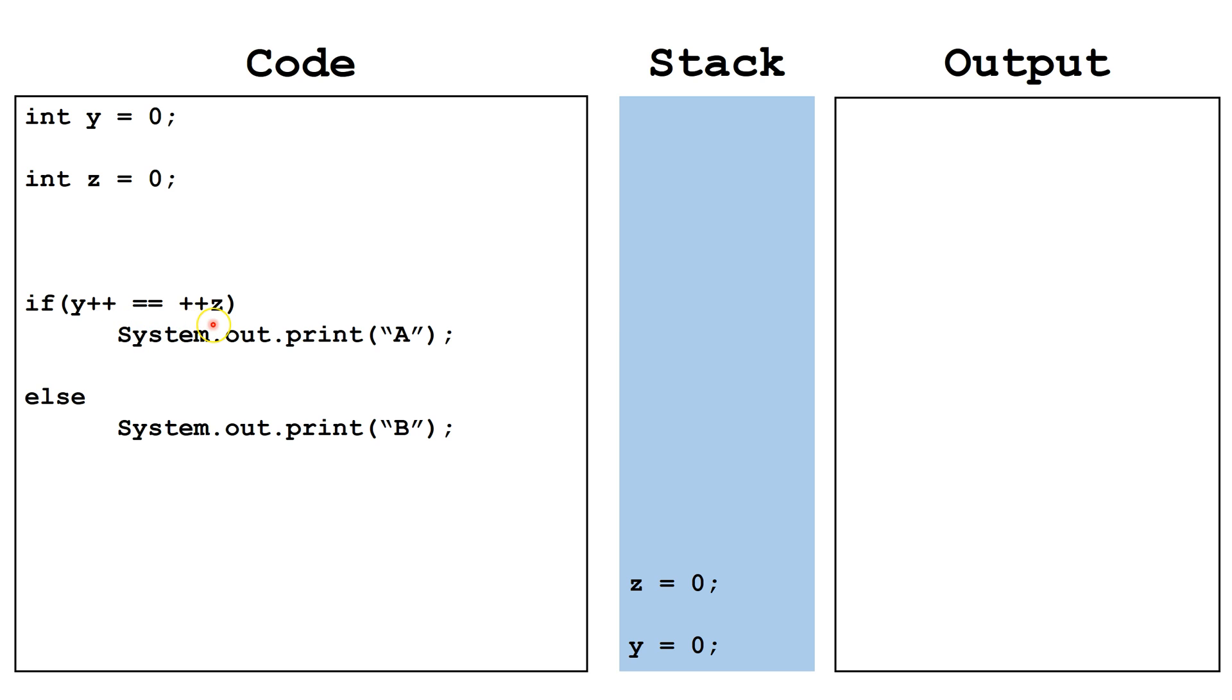Both y and z start out equal to zero. So for the purpose of the comparison, y equals zero and z equals one. This will evaluate to false and it will execute the code under the else. Notice when we hit the else, we have finished the original comparison, so now y and z are both equal to one. We output the value b.